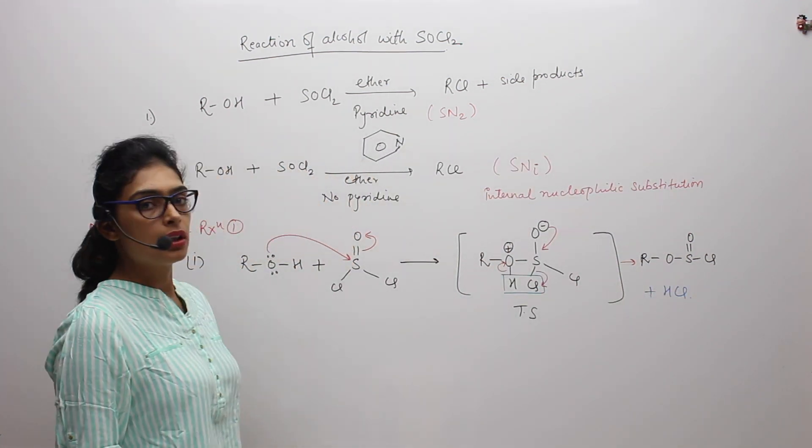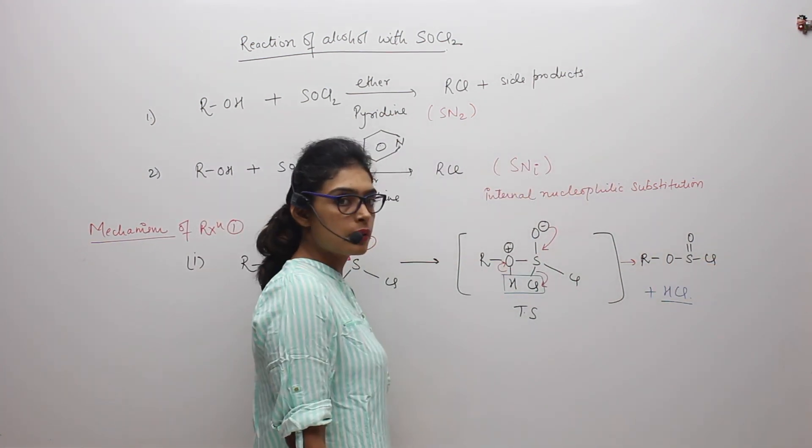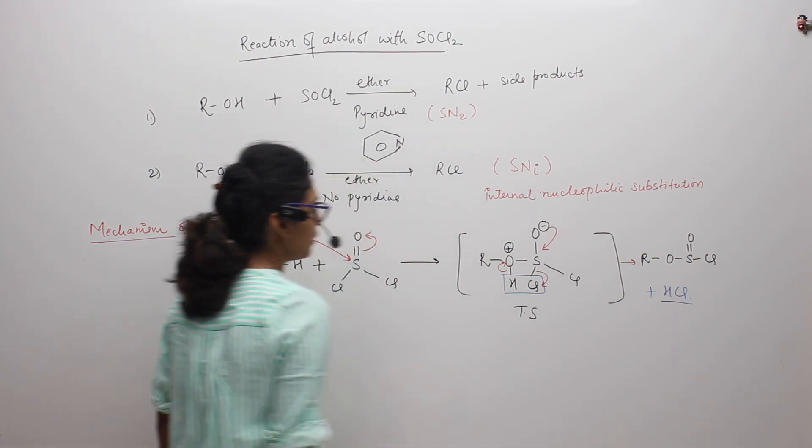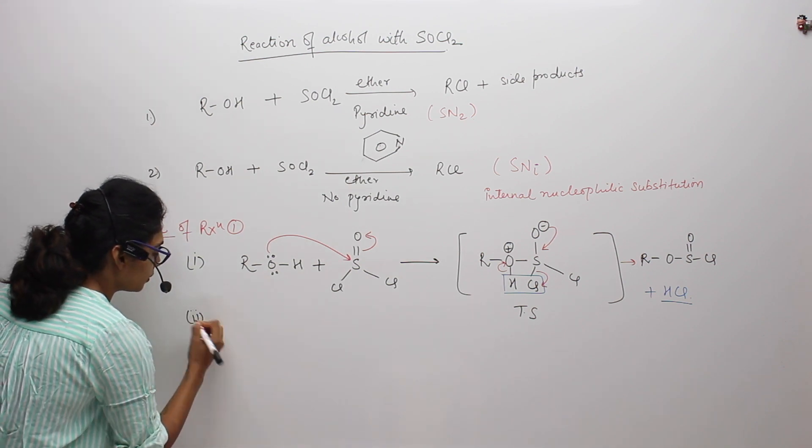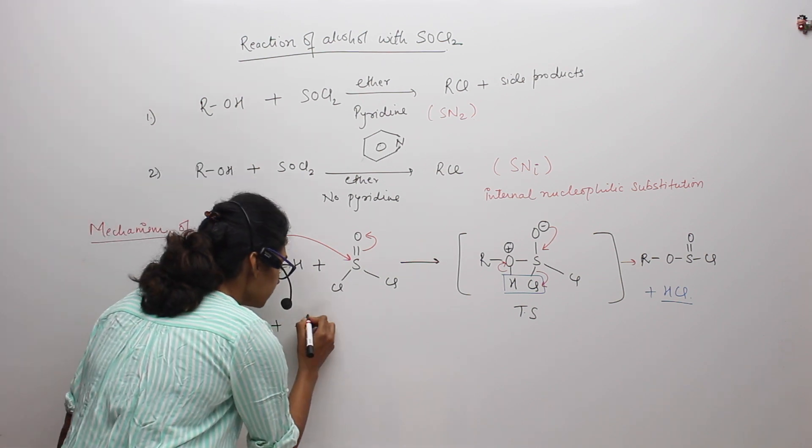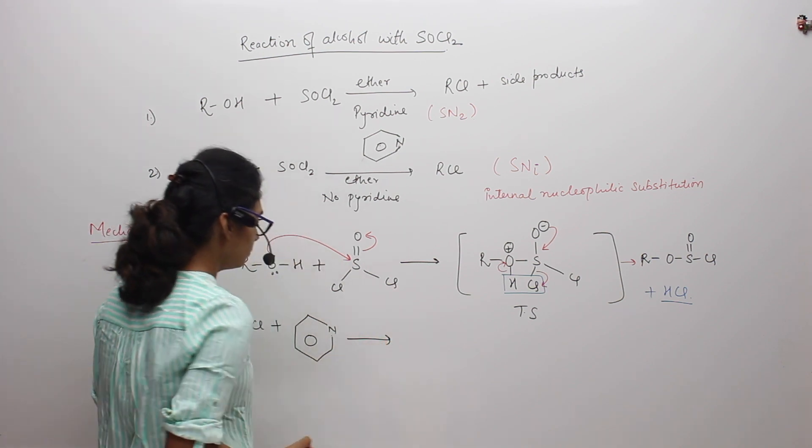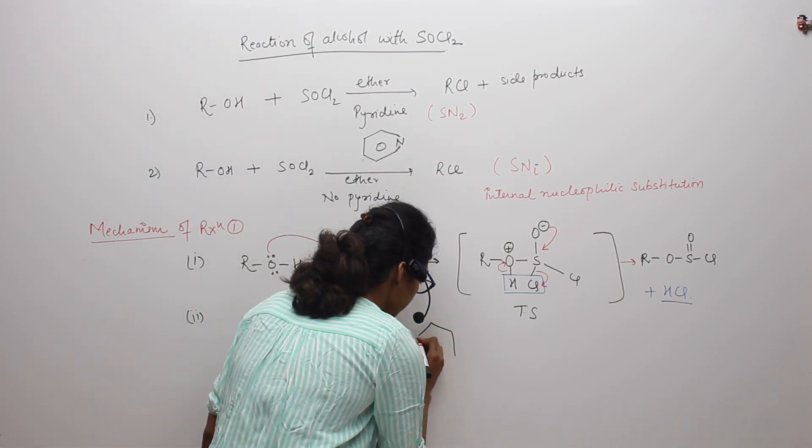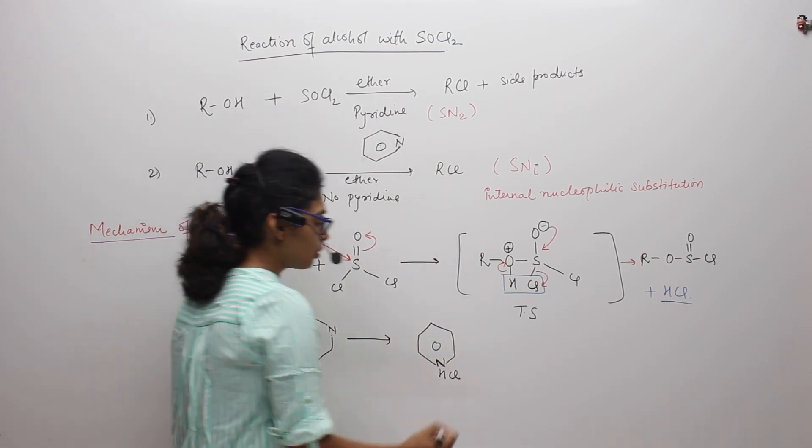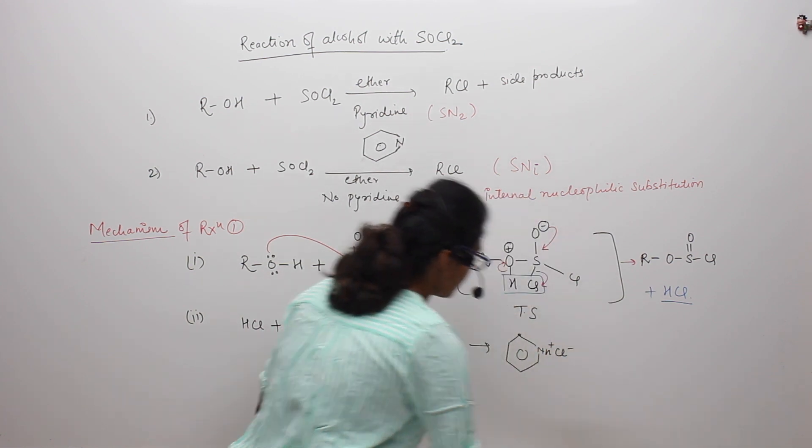This will be the product of the first step. Now we have HCl in the system and we have this product in the system. In the second step, this HCl will react with pyridine and will form a salt. We can also write it as NH plus Cl minus.